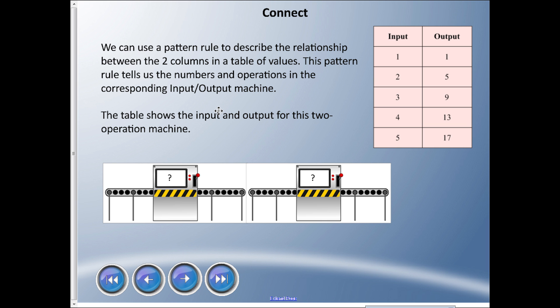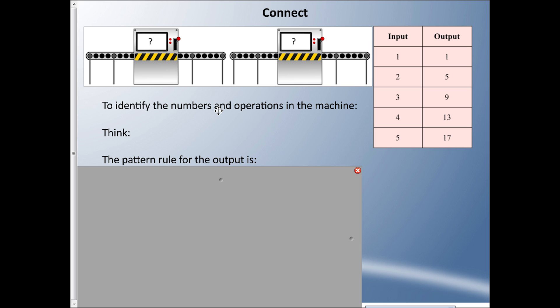Now we're moving to Goal number two: input-output machines. We're going to try to figure out the operations that are inside the input-output machines using the table. We have a two-operation machine here, and we need to figure out what is happening when we input numbers and get outputs. The input pattern rule is start at one, add one each time. The output pattern rule is start at one, add four each time.